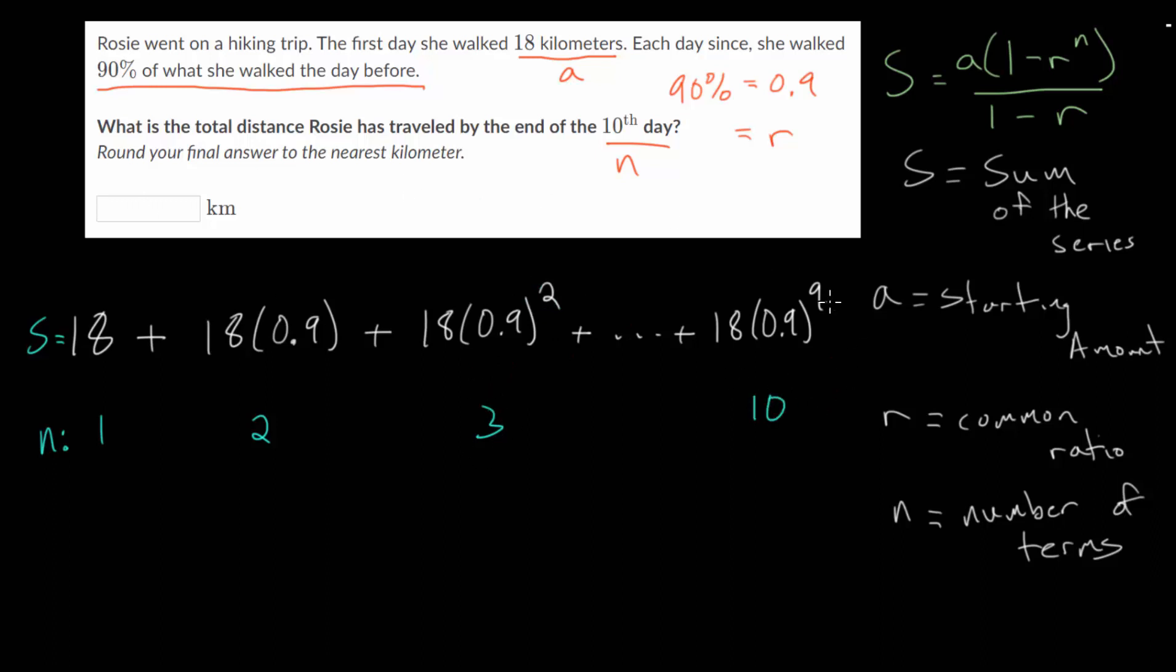So for the 10th term, the exponent will be one less than that. It'll be 9. Now, this is what our sum actually looks like, but of course, it's very difficult to add this up by hand. You can use a calculator, but it's fairly tedious. You have to add 10 different things. So we're just going to apply the formula.